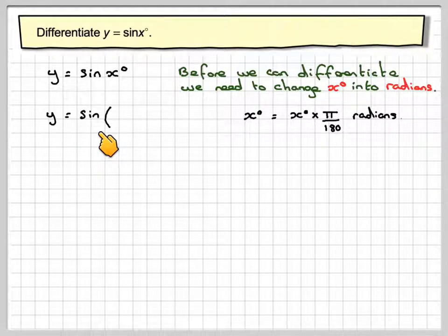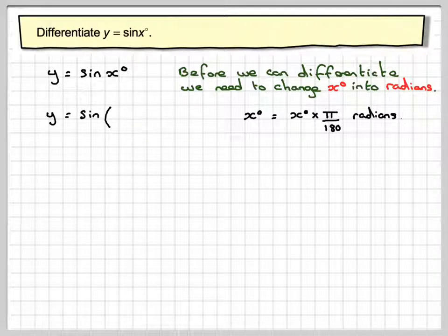So we've got y will become sine of, instead of x degrees, it will be pi over 180 times x, and we can now differentiate this.